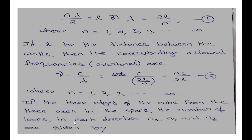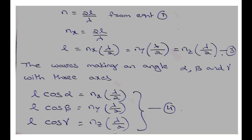The corresponding allowed frequencies are given by ν = c/λ = Nc/2L. This is equation 2, where N = 1, 2, 3, 4, ... to infinity. If the 3 edges of the cube form the 3 axes in space, the number of loops in each direction Nx, Ny, and Nz are given, so 2L/λ equals Nx, Ny, and Nz into λ/2.